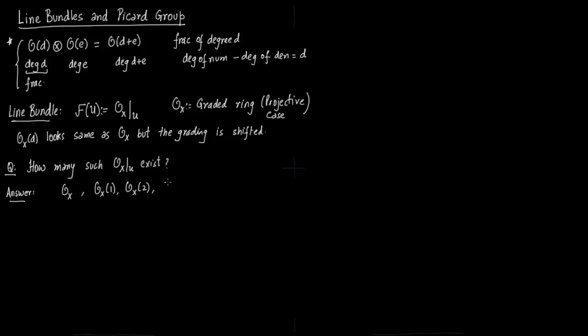Obviously OX by itself exists with no shifting, then by shifting by 1, shifting by 2, shifting by 3, and so on, and shifting in the opposite direction OX(-1), OX(-2), OX(-3). We will later on show why OX(1) and OX(-1) are dual to each other. In general OX(N), OX(-N) are dual to each other.